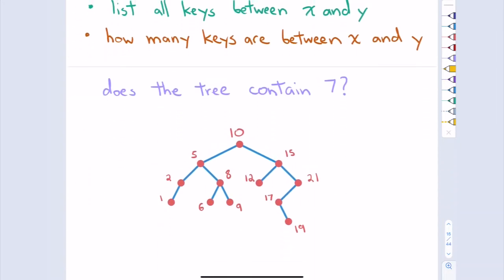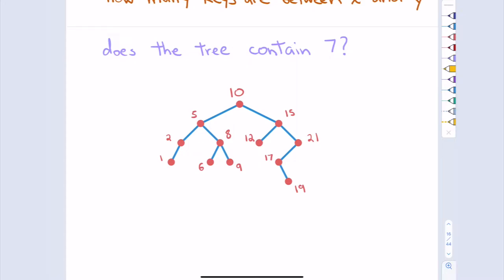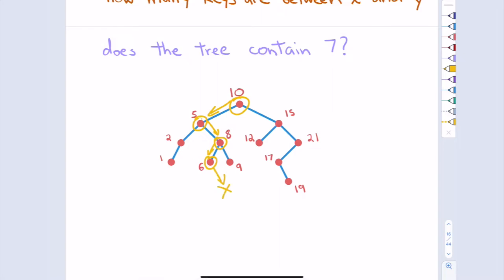That leads to a lot of practical and interesting operations: figure out if a key is in my tree, find the first key bigger than a given value if the key isn't in the tree, list all keys between two keys, or count how many keys are between two keys. For example, if I have this BST and want to know if it contains seven: start at the root (ten), seven is smaller so go left; reach five, seven is bigger so go right; reach eight, seven is smaller so go left; reach six, seven is bigger, go right — and I realize the tree doesn't have seven.